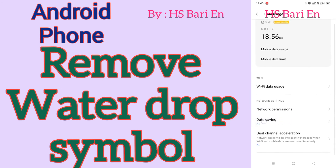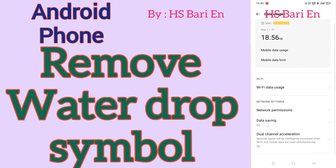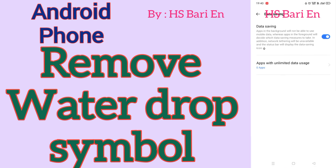So here on my smartphone screen you can see the data saving option — I am clicking on it and opening it. I will disable it from here. After that, you can see that the water drop symbol has disappeared from my phone's notification bar. Hope friends this video is helpful for you — if it is helpful, don't forget to subscribe to my channel.